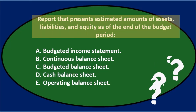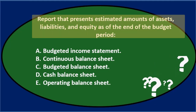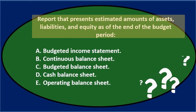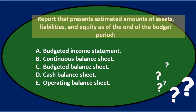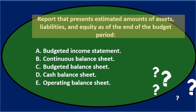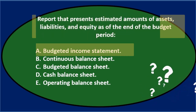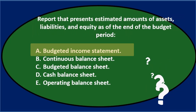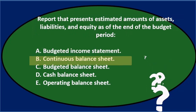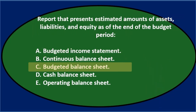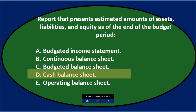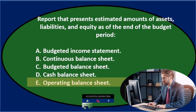Question: A report that presents estimated amounts of assets, liabilities, and equity as of the end of the budget period is either: A, Budgeted Income Statement; B, Continuous Balance Sheet; C, Budgeted Balance Sheet; D, Cash Balance Sheet; or E, Operating Balance Sheet.